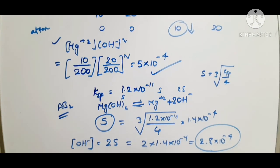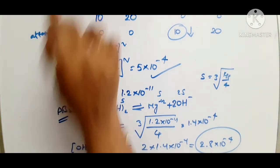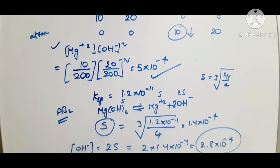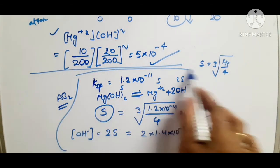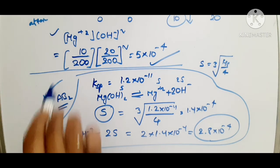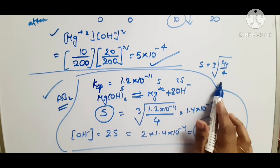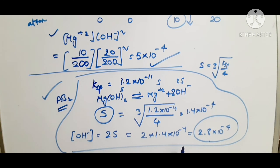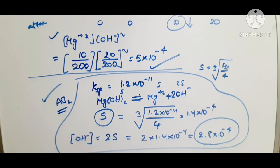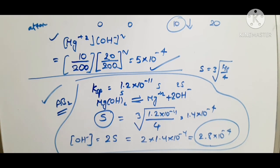If the question doesn't ask to check for precipitation formation, you can directly identify the electrolyte type, use the relation between solubility and solubility product, and calculate easily. These are a few examples of solubility product numerical problems. Thanks for watching.